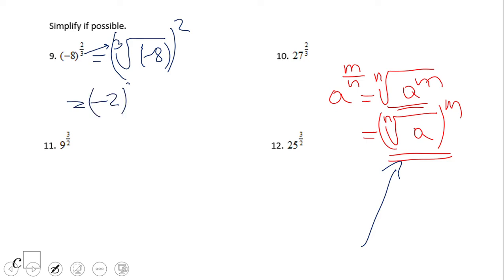What about number 11? We have square root of 9, because of the index 2, and then raised to the third power. Square root of 9 is 3, raised to the third power is 27. Pause this video clip and try number 10 and 12.